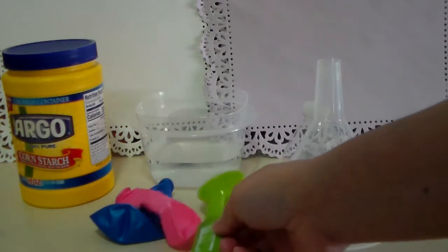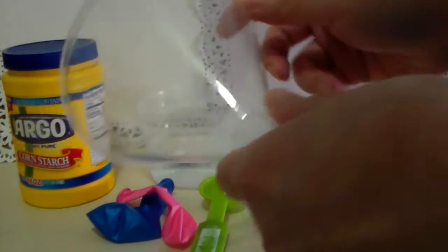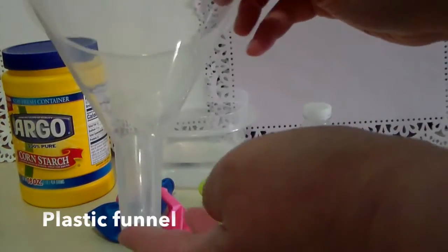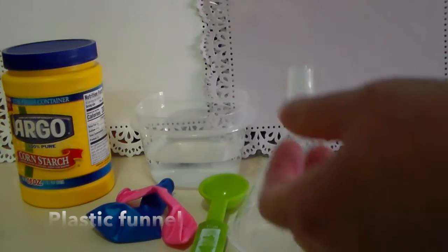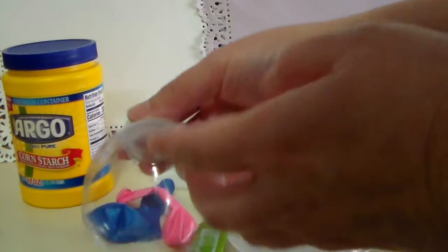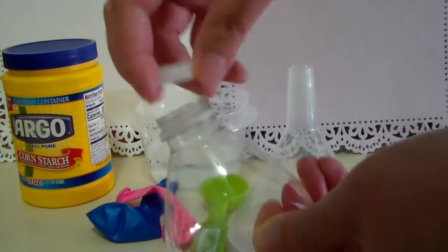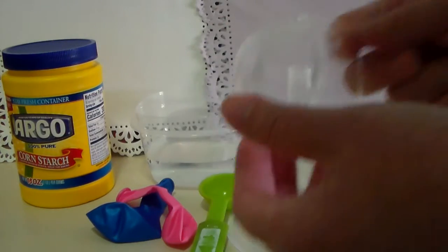We need one tablespoon, and then we need a funnel. But if you don't have a funnel like this, you can use a water bottle top. You just take the cap off, and then you can use it as a funnel.